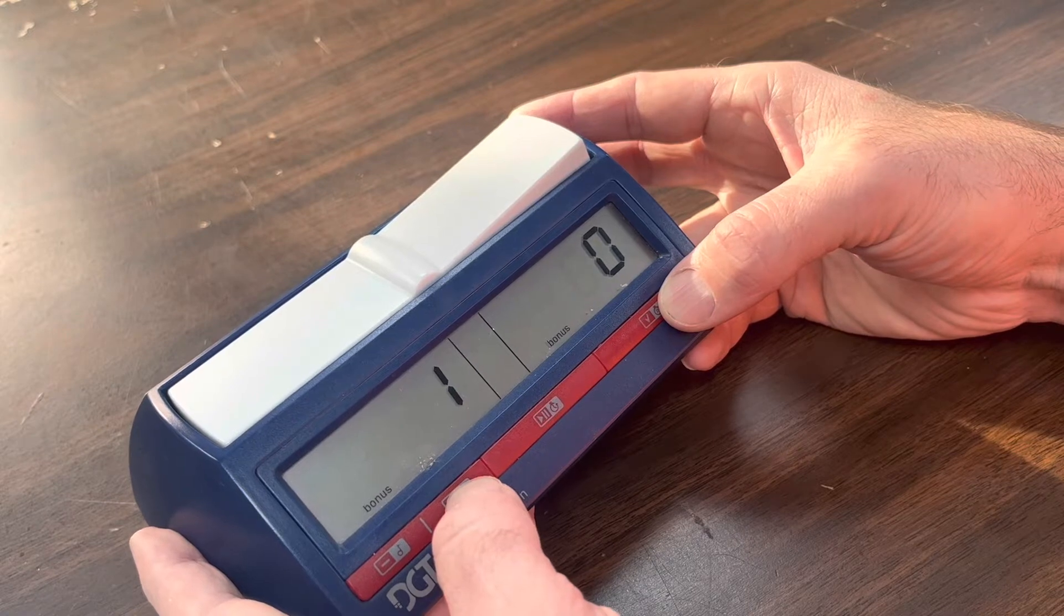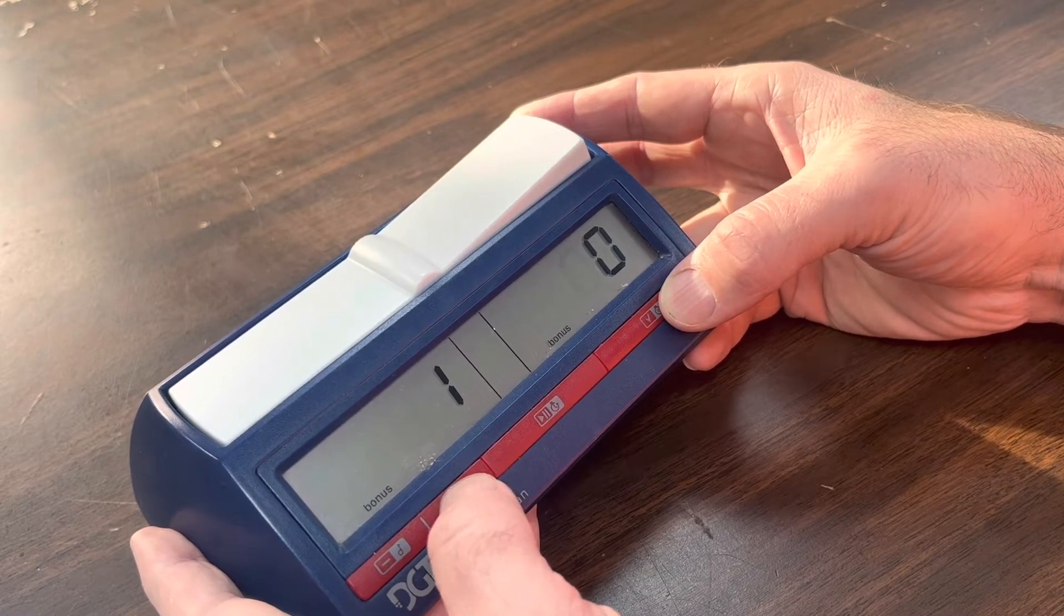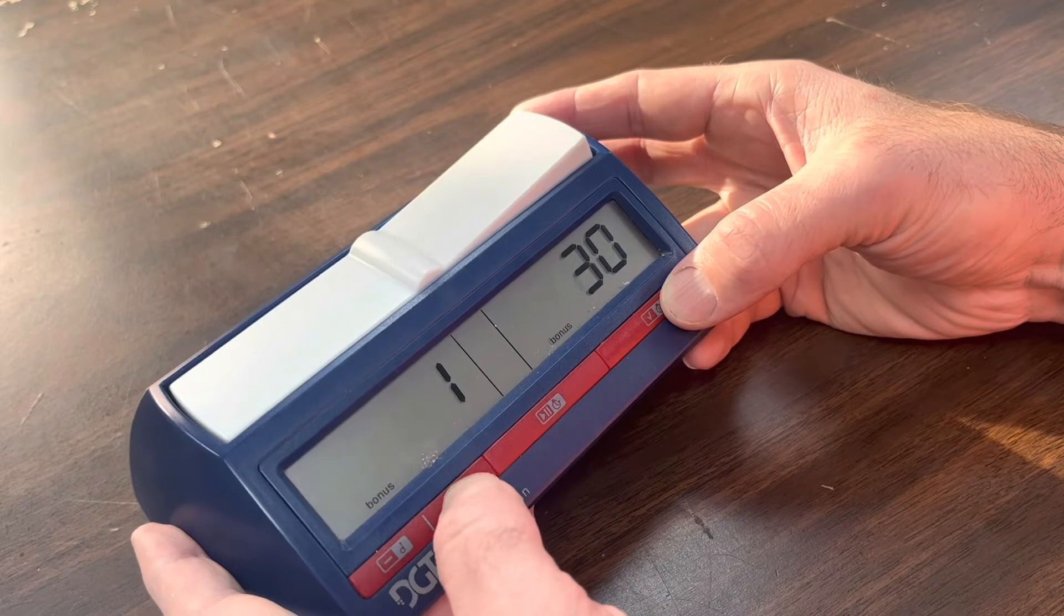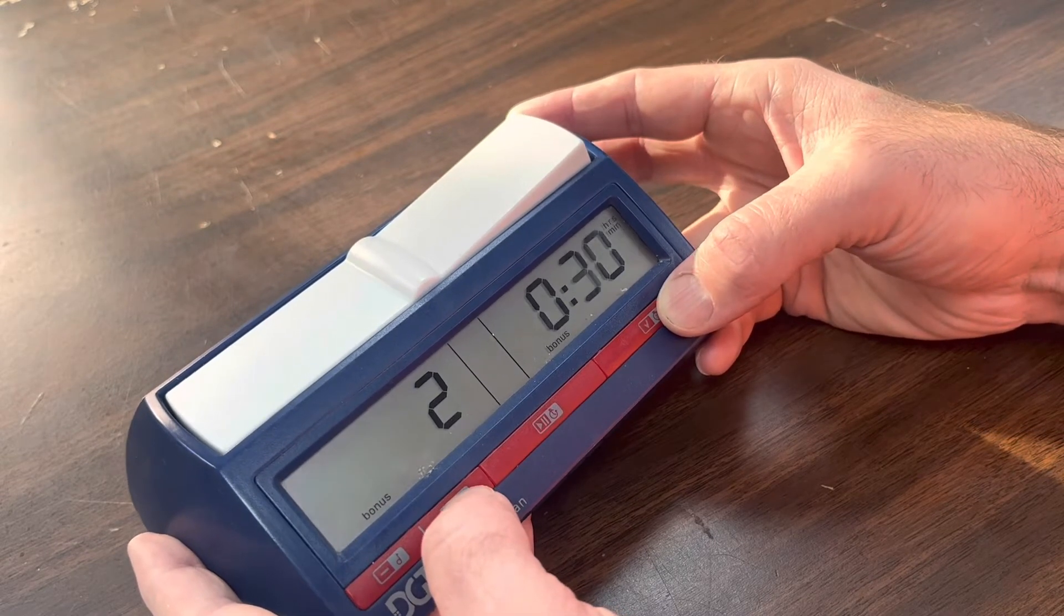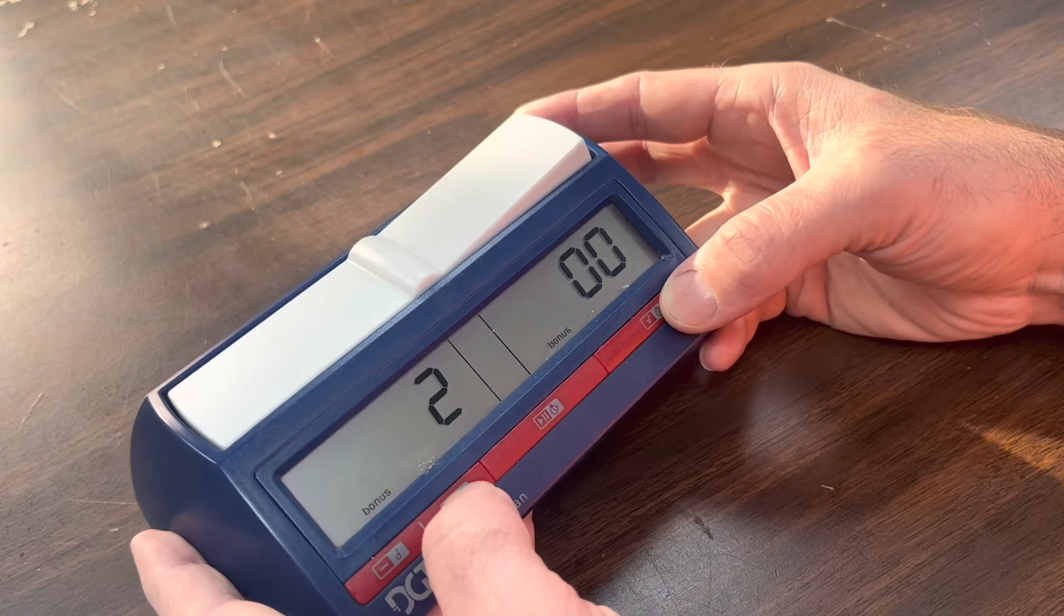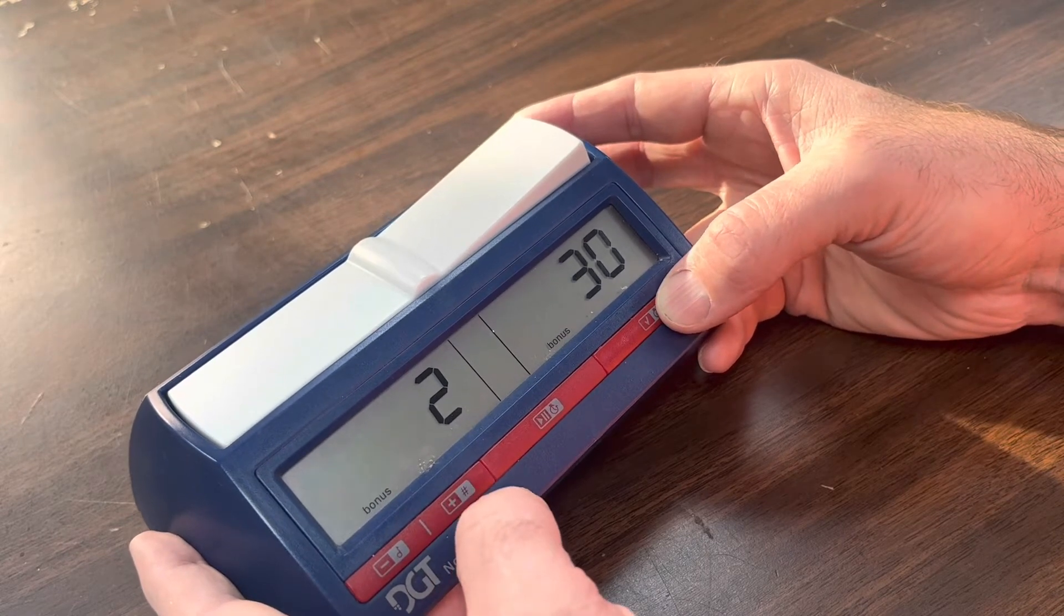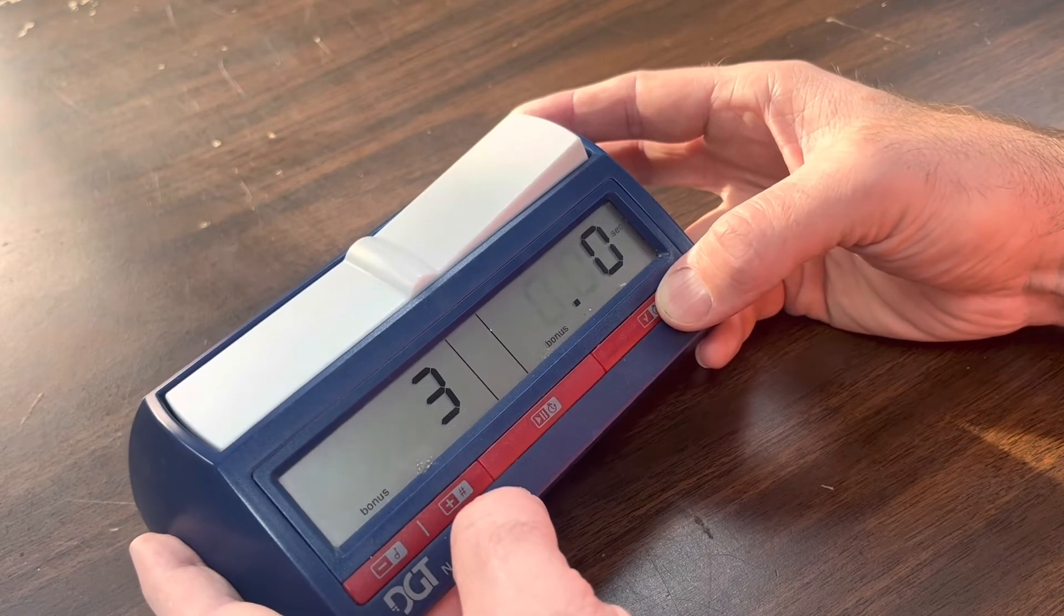Now, the bonus. And that's in 40 minutes. Second time controls game 30 with zero seconds. 30 second increment. Everything else stays zero.